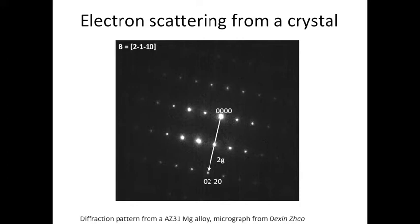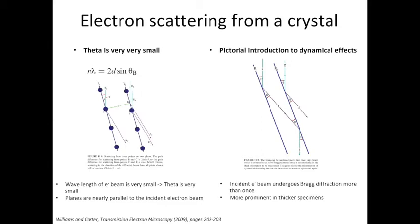Before finishing today's video, I'd like to talk more about electron scattering from a crystal. The first thing I'd like to discuss is the value of theta in TEM is very very small. The reason is because when we view electron beam as a wave, the wavelength is extremely small, so n lambda is extremely small. For the 2d sin theta part, the lattice spacing is constant for a material, so the theta angle has to be very small as well. What this tells us is the planes that undergo Bragg's condition are nearly parallel to the incident electron beam direction.